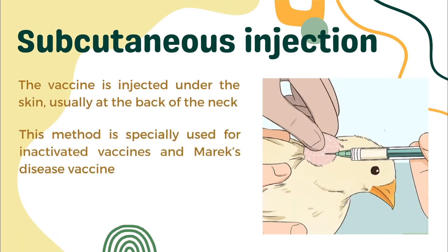The subcutaneous injection method is very similar to the intramuscular injection, but in this case the vaccine is injected under the skin, usually at the back of the neck instead of the breast muscles. This method is specially used for inactivated vaccines and Marek's disease vaccine.